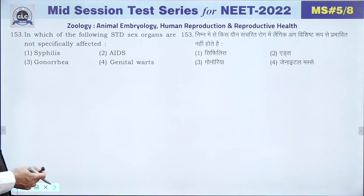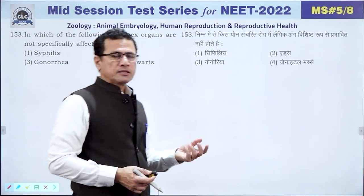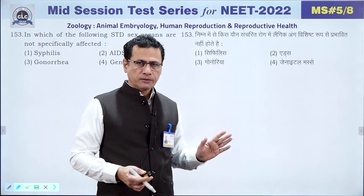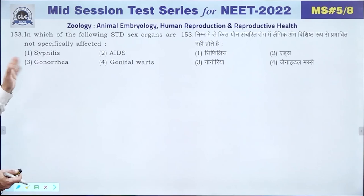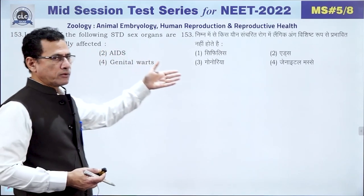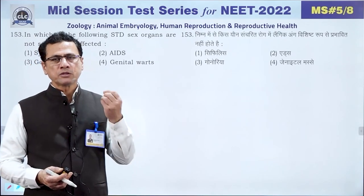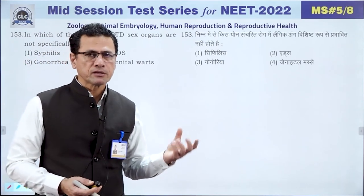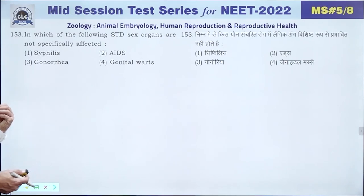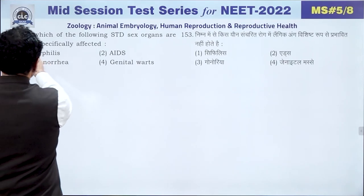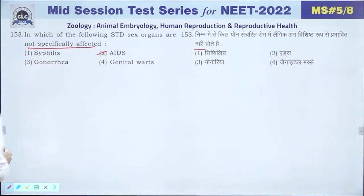Question 153: In AIDS, sex organs are not specifically affected, unlike syphilis, gonorrhea, or genital warts where genital organs are directly affected with lesions and secretions. AIDS primarily affects the immune system. The answer is 2 — AIDS. Question 154: World AIDS Day is on 1st December. The answer is 1.